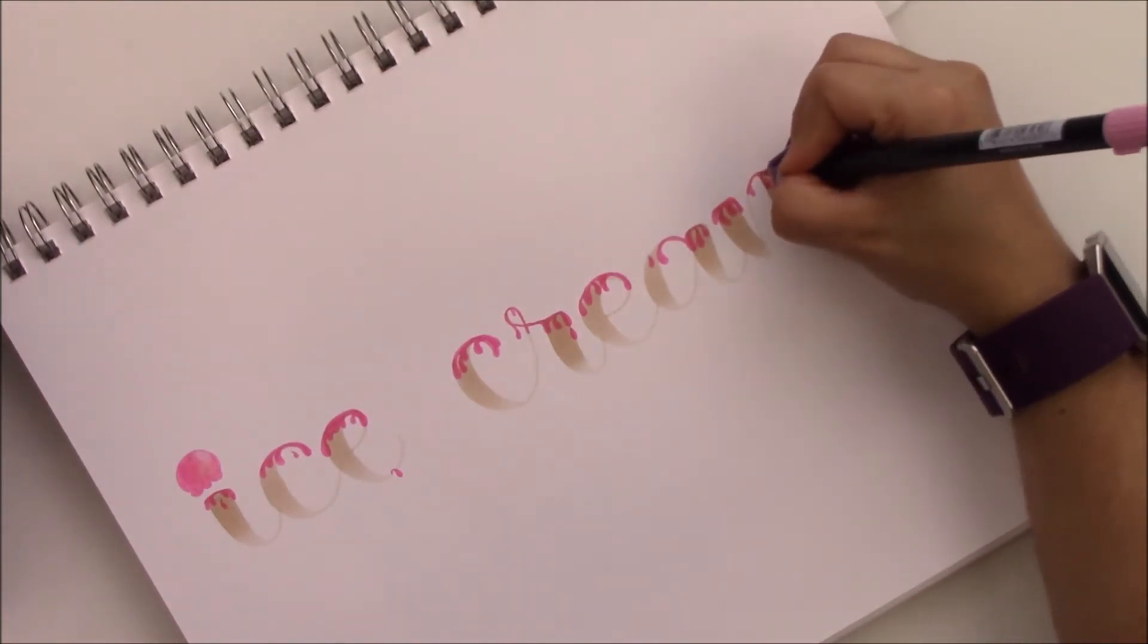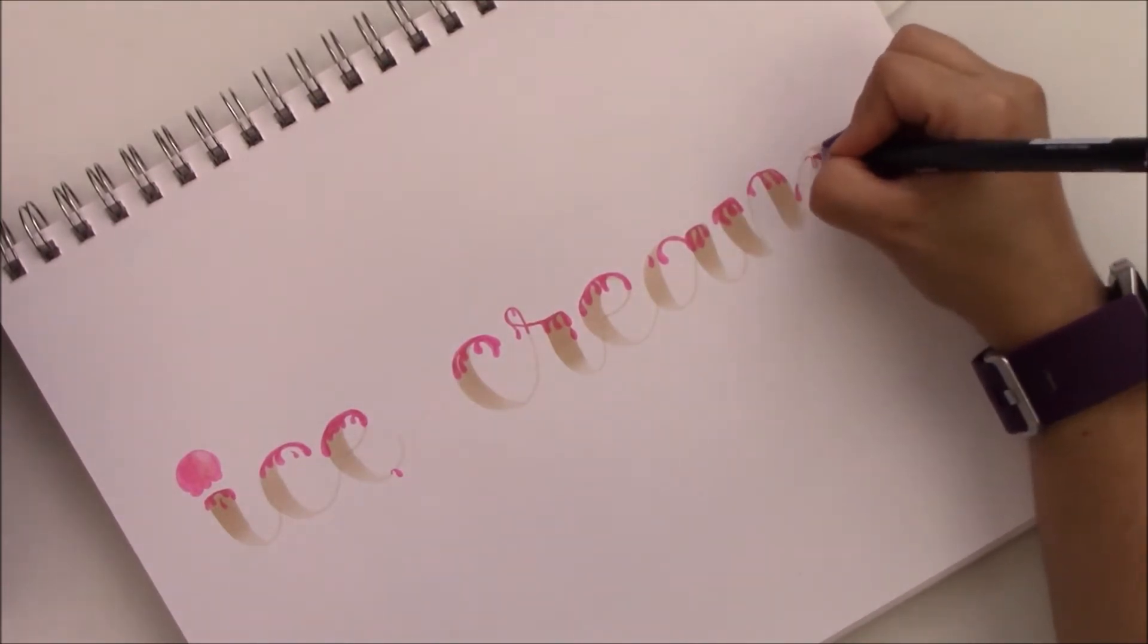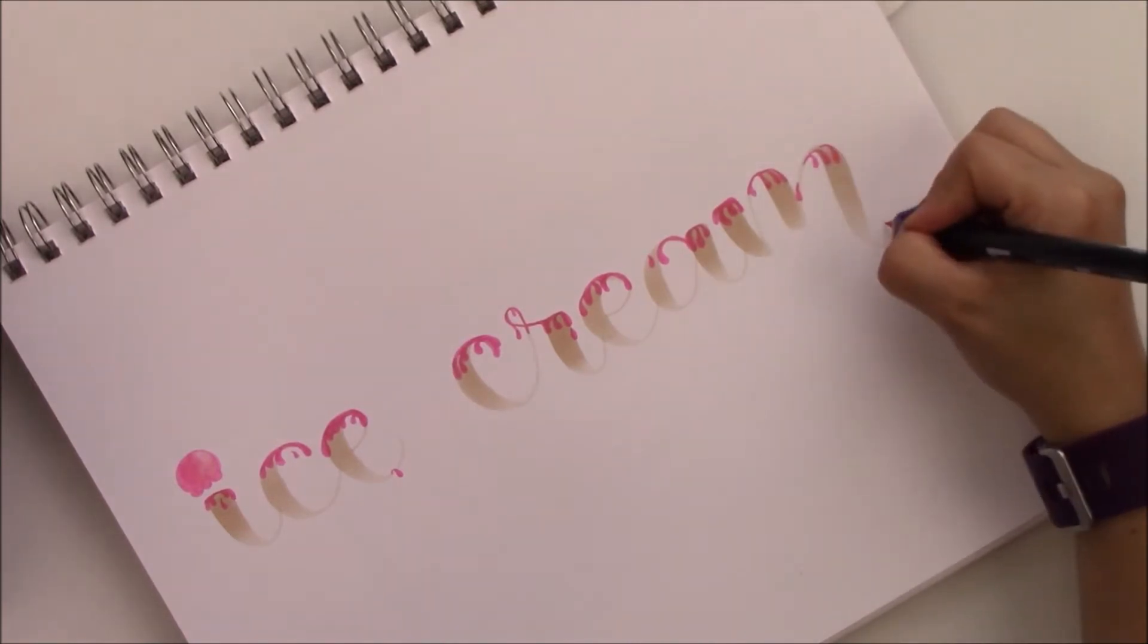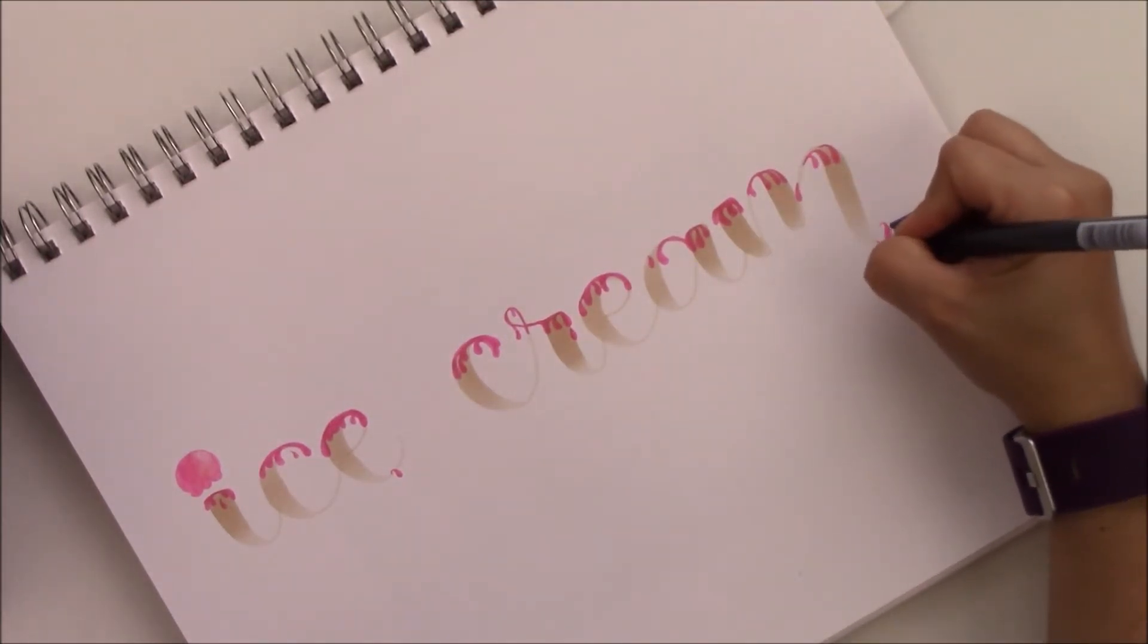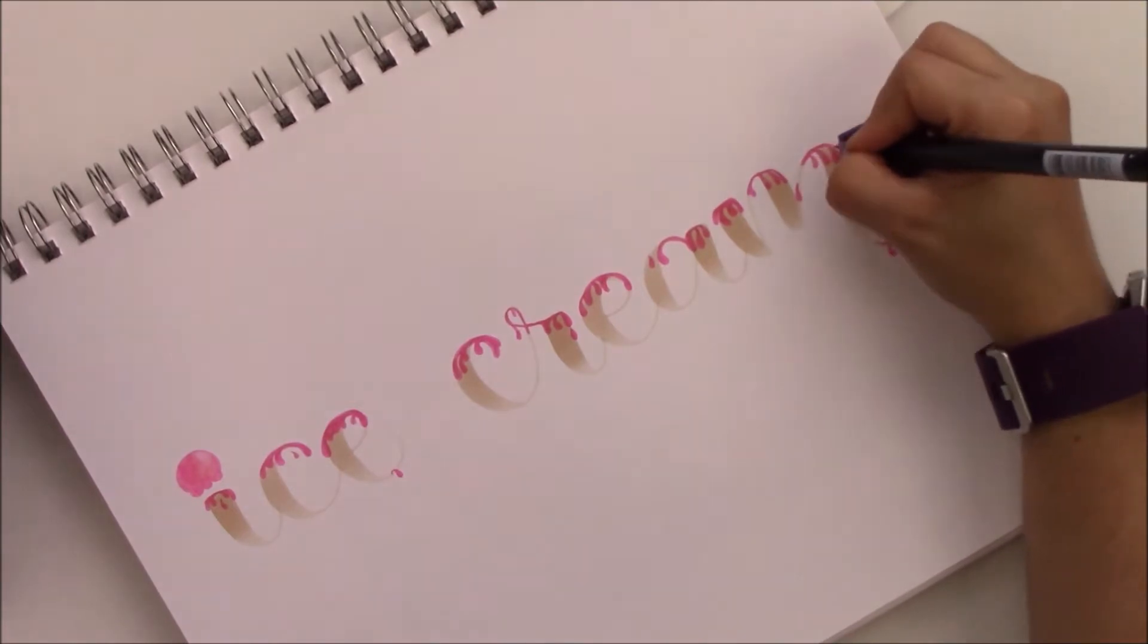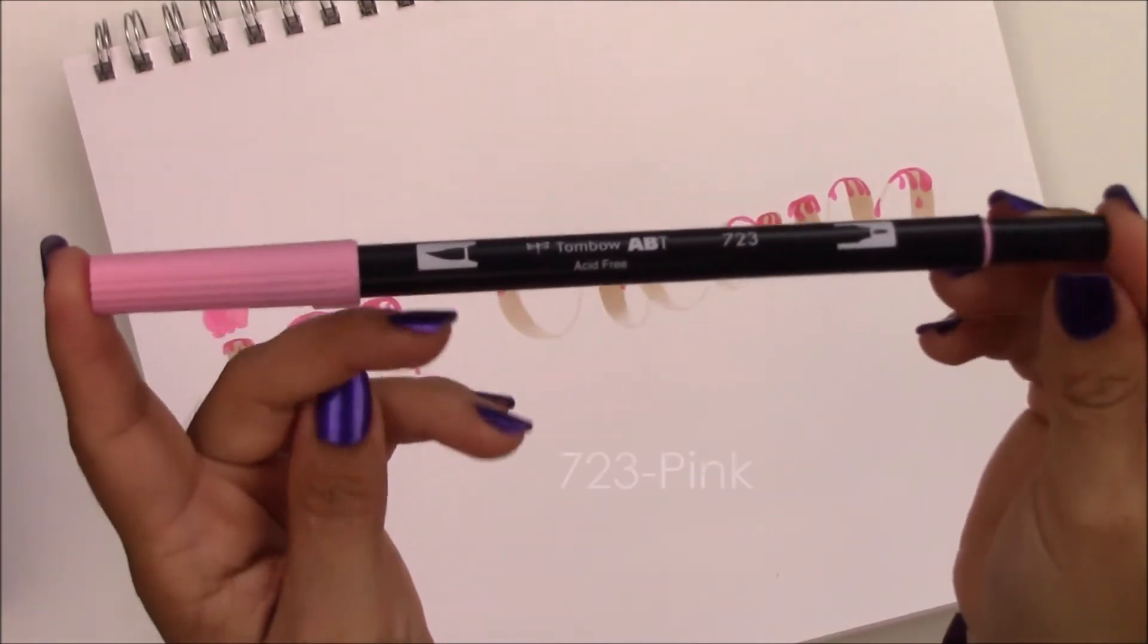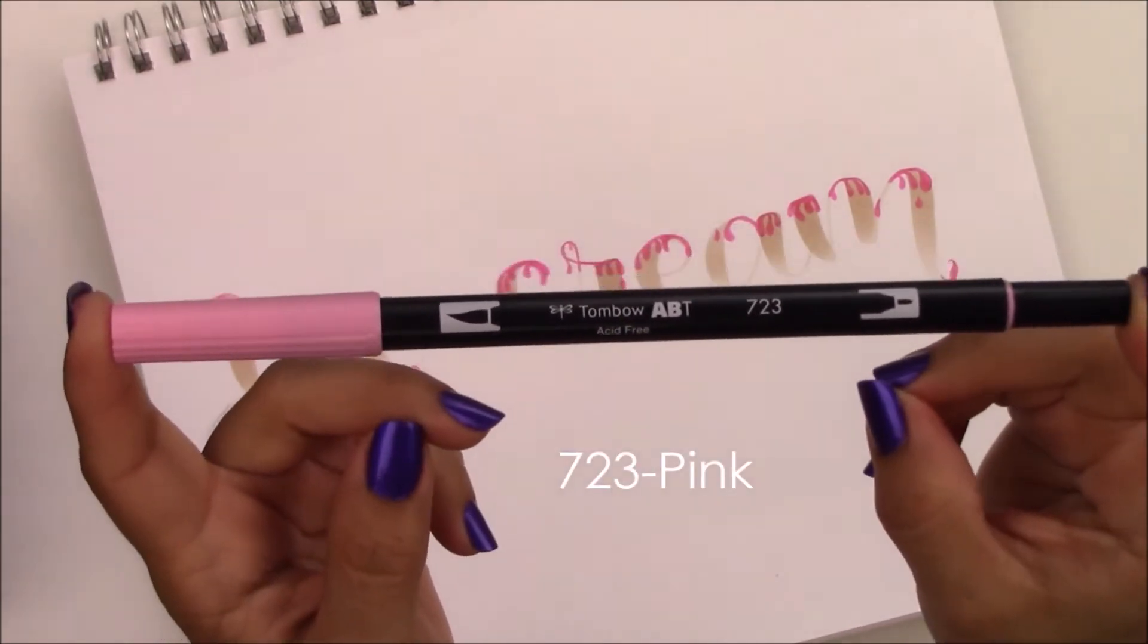The drippings can be random. They're different sizes and widths, and I put them in different places. You don't have to put it exactly on the word. You can put it like it's falling off the letter or around it. I use the 723 pink for this melted ice cream effect.